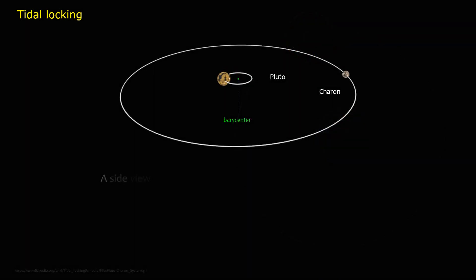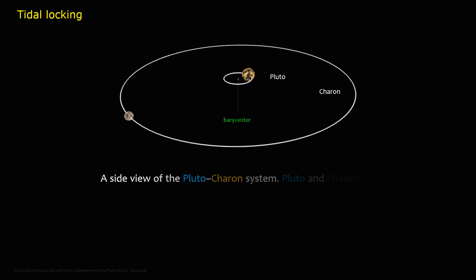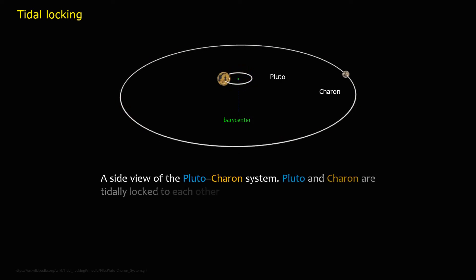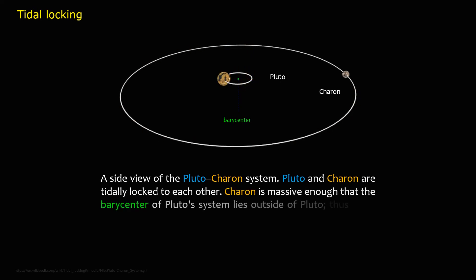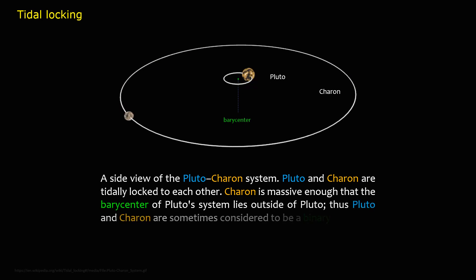A side view of the Pluto-Charon system. Pluto and Charon are tidally locked to each other. Charon is massive enough that the barycenter of Pluto's system lies outside of Pluto, and thus Pluto and Charon are sometimes considered to be a binary system.